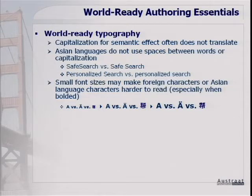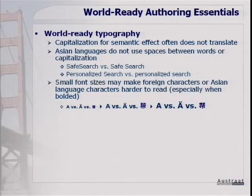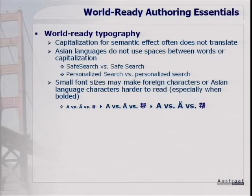Small font sizes may make characters much more difficult to read in other languages than in English. For example, comparing a regular 'A', an umlaut 'Ä' with two dots, and an ideographic character: at the same font size, it's a lot easier to read the English letter. The umlaut is a little harder to make out. The Asian character is almost illegible because it's smudged — it's a dense ideographic character. So you have to go up in font size to make Japanese or Chinese legible, while you can keep a smaller font size for English.